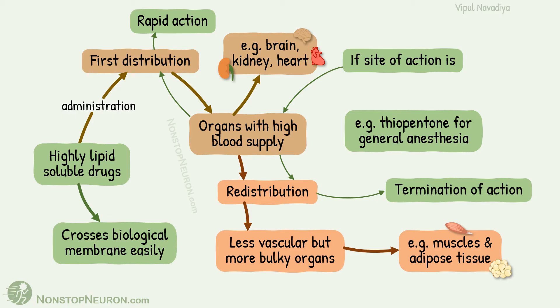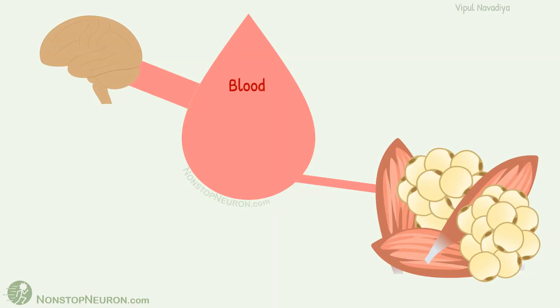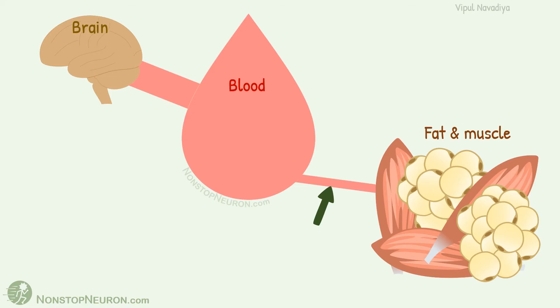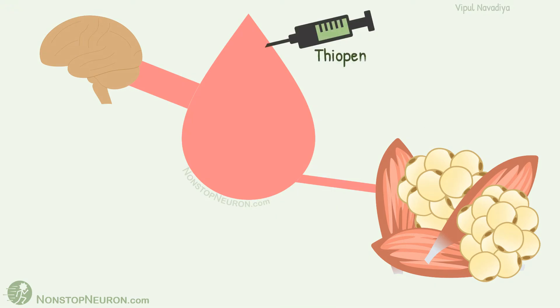Let's understand all this with the example of thiopentone. Here, this is blood. This is brain. And this represents the fat and muscle mass of the body. This thick blood vessel indicates that the blood flow to the brain is high, and this thin blood vessel indicates that blood supply to muscles and fat is relatively low. Now, the thiopentone — it's a highly lipid-soluble drug.